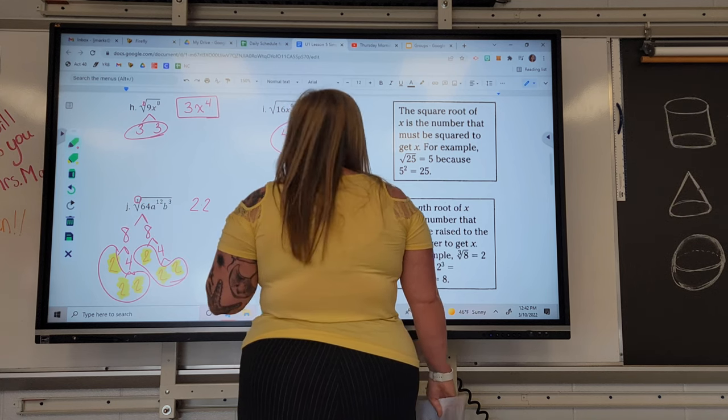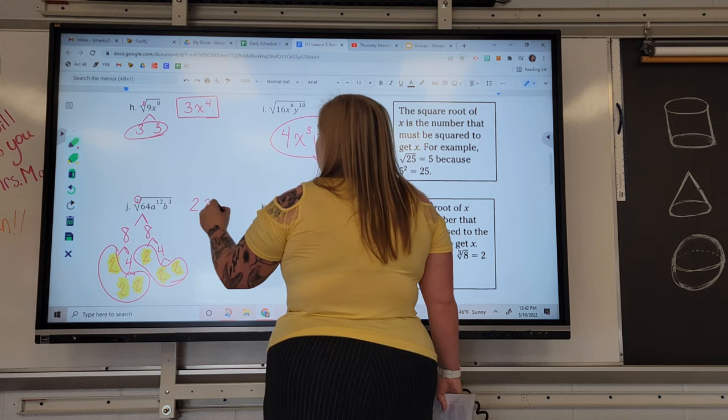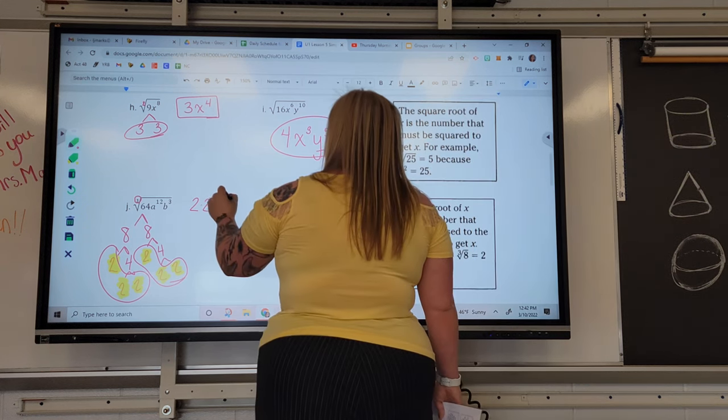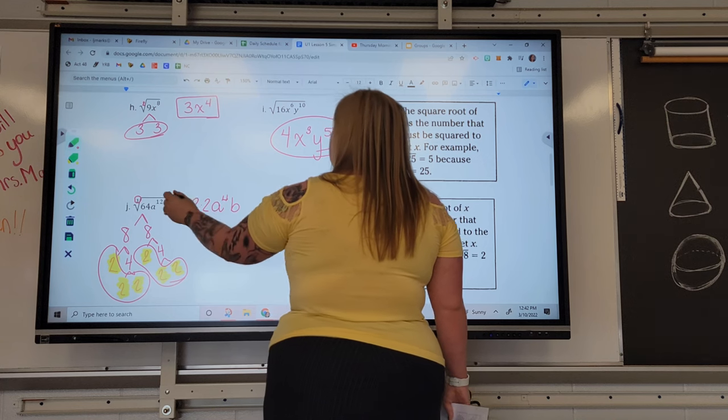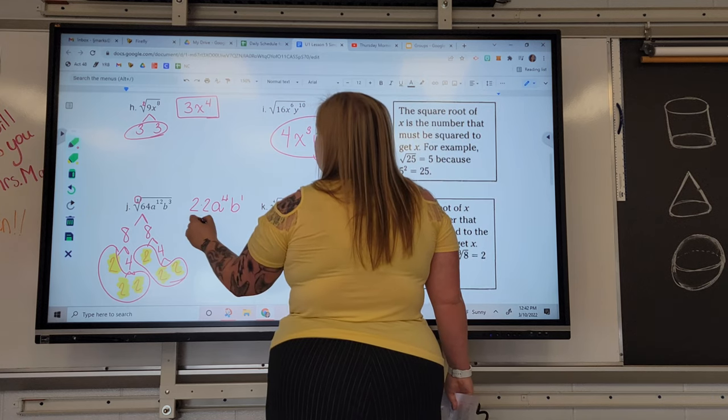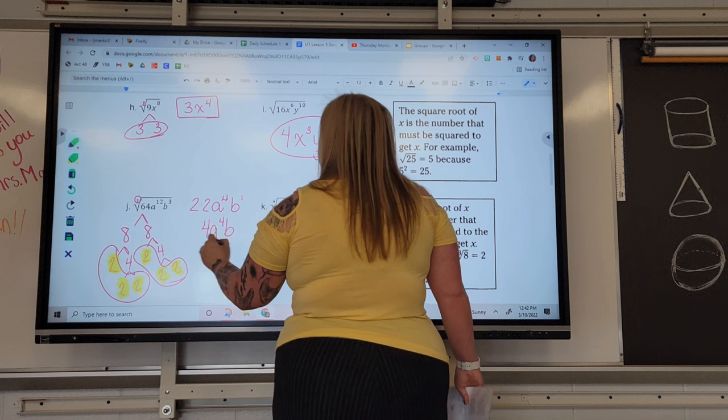If I'm looking for groups of 3, how many groups of 3 can I make with 12 A's? That's 4. How many groups of 3's can I make with 3 B's? 1. And we can clean that up. 2 times 2 is 4. So we have 4 A to the 4th, B to the 1st.